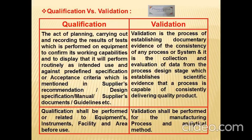The predefined specifications or acceptance criteria are mentioned in the supply recommendation, design specification manual, etc. Validation is the process of establishing documentary evidence of the consistency of any process or system. It is the collection and evaluation of data from the process design stage, which establishes scientific evidence that a process is capable of consistently delivering quality product.